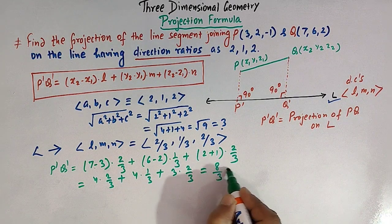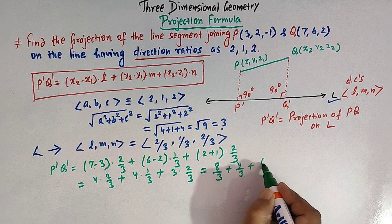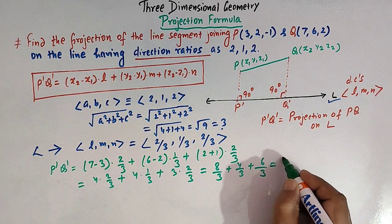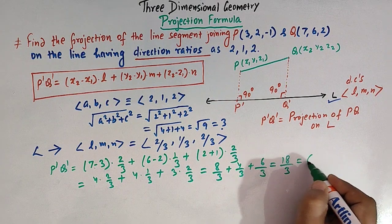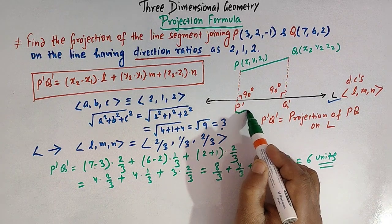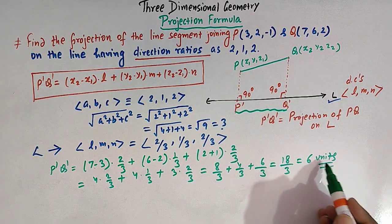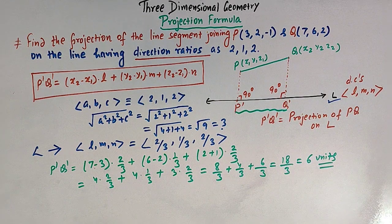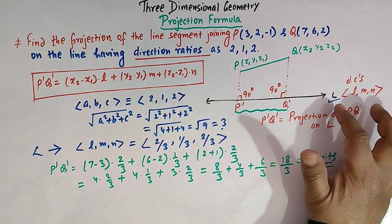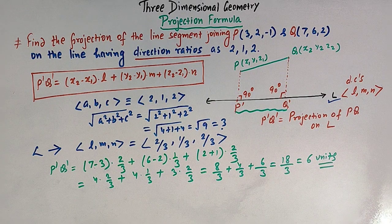So this is 8/3 + 4/3 + 6/3. That gives (8 + 4 + 6)/3 = 18/3 = 6. So the length of the projection is 6 units. This is how we find the projection of a line segment joining two points on a given line L whose direction cosines are L, M, and N.